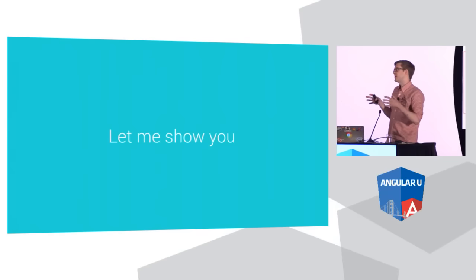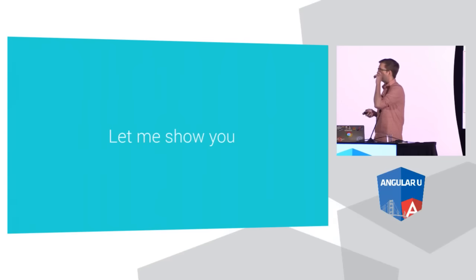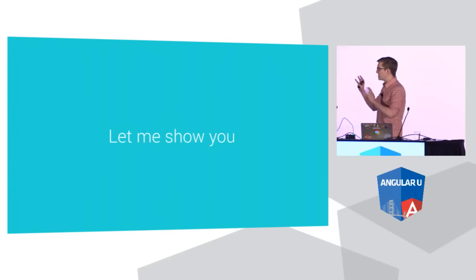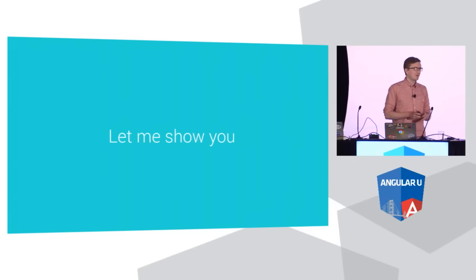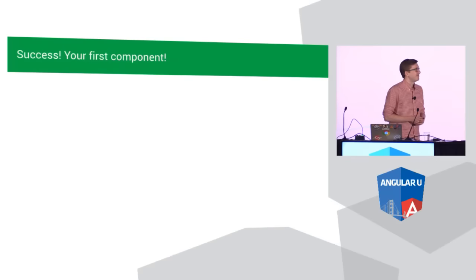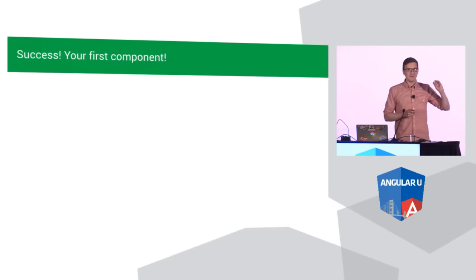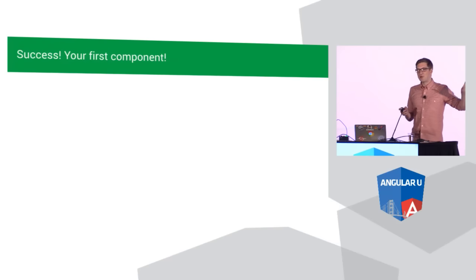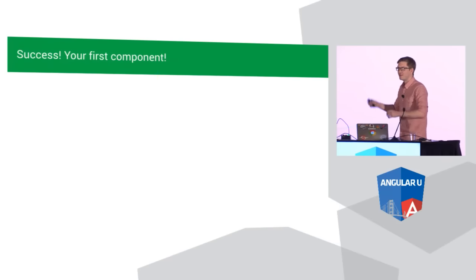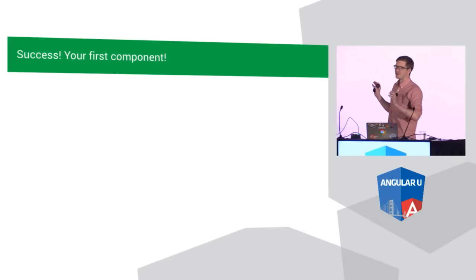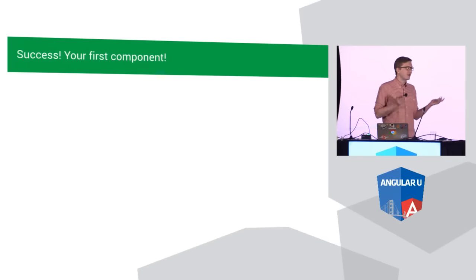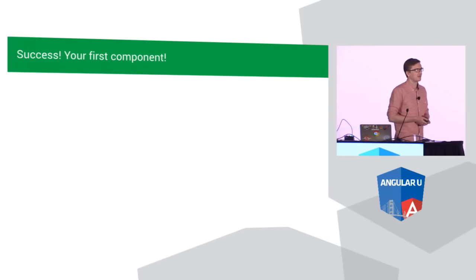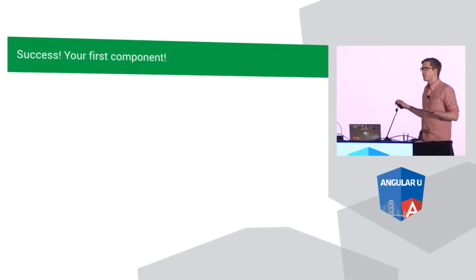After that, I'm going to talk a little bit about how we knit these things into applications, and then I'm going to show you some interesting experiments with doing Polymer 1.0 and Angular 2. So this is what I'm going to build today — the world's most boring component. It's just a little banner that you would display to the user as a success notification, but it's a useful tutorial of what it looks like to actually build a real component.